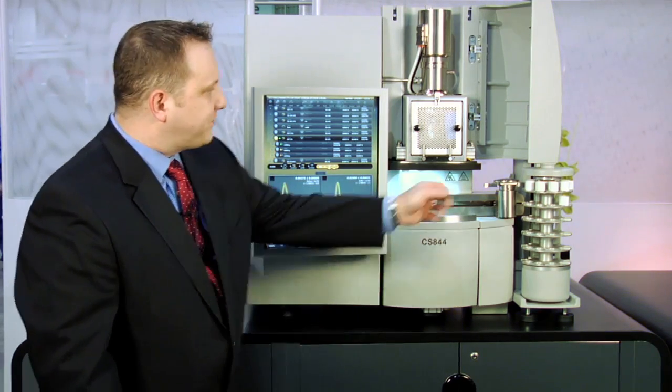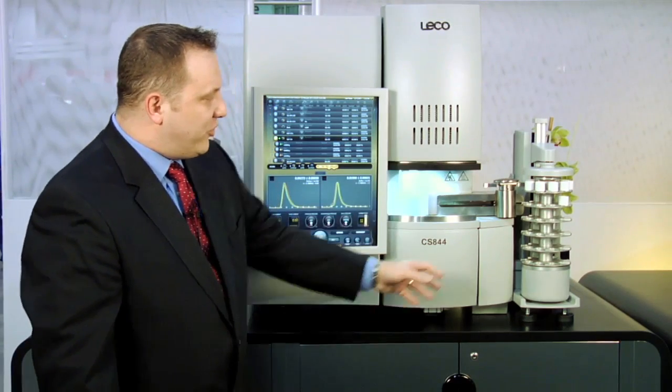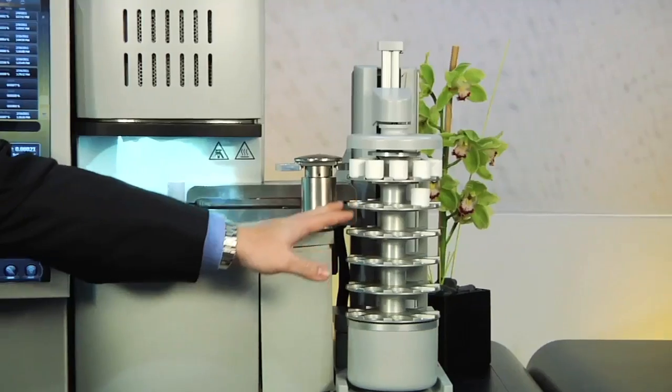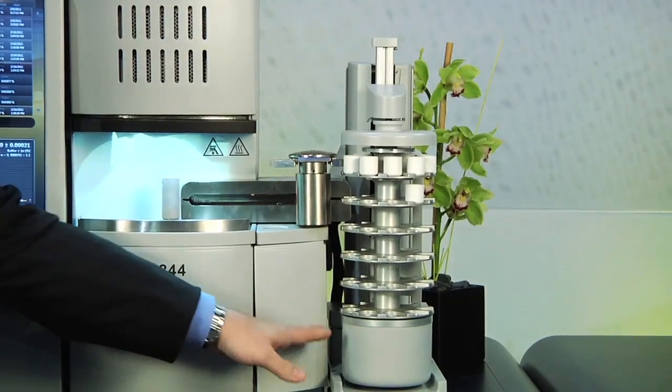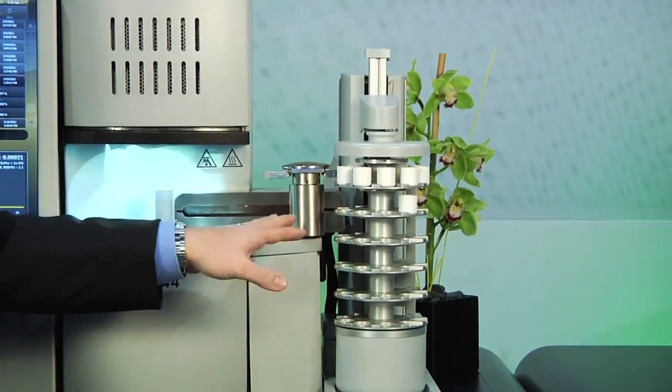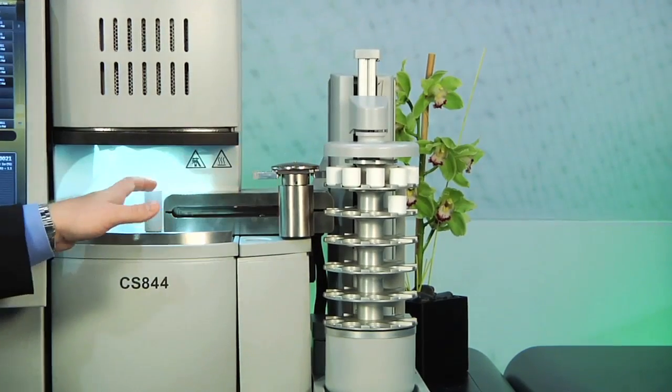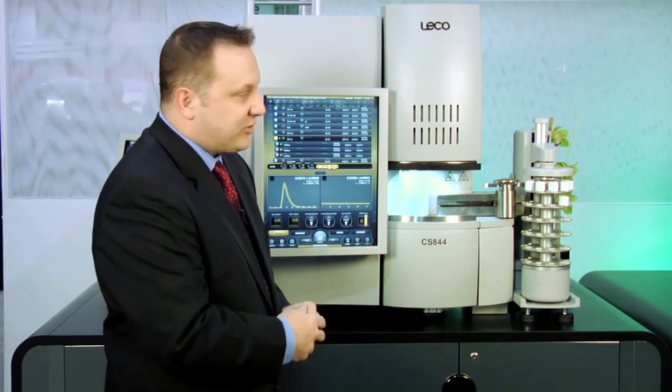This system is also equipped with our optional 60 position shuttle loader. The system utilizes six 10 position carousels on a vertical assembly that will raise and lower those carousels so that the shuttle grippers can pick them and place them on the crucible. The key to this system is the simplicity in design and the lack of complex movements.